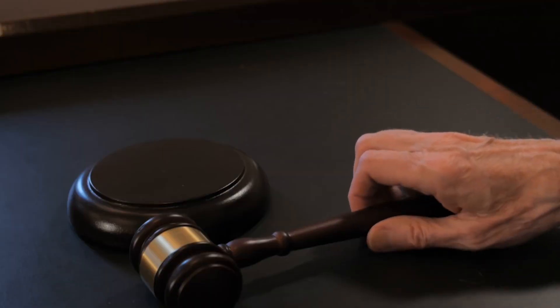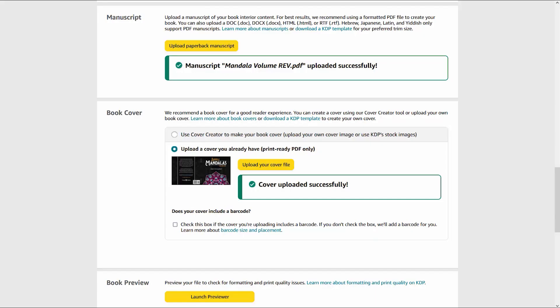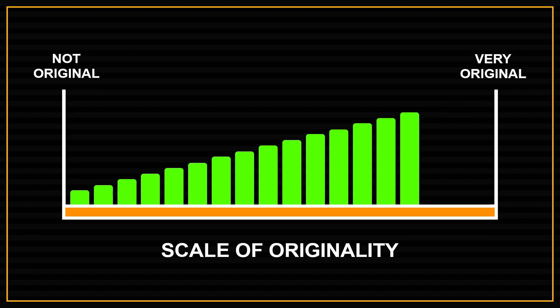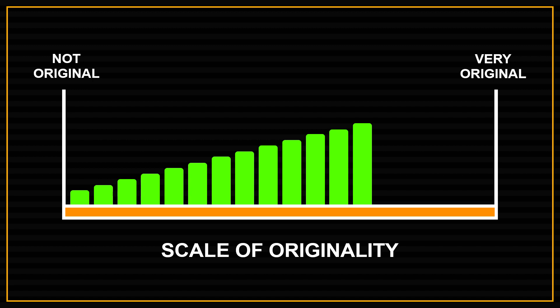Who determines what a sufficient degree of originality is? Well, for starters, the courts — when they're giving you a verdict on your copyright lawsuit. Amazon and KDP, when they're reviewing the book that you've uploaded to their website. And Creative Fabrica, when you're using their artwork. You see, originality is on a sliding scale. How original something is comes down to the opinion of whoever is making the judgment call. And this is why copyright laws are so confusing to understand. Now before we get into how using third-party artwork affects copyright, we first need to take a look at KDP's user guidelines as they pertain to copyright and using third-party artwork.